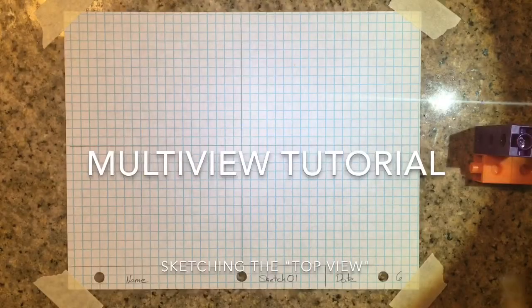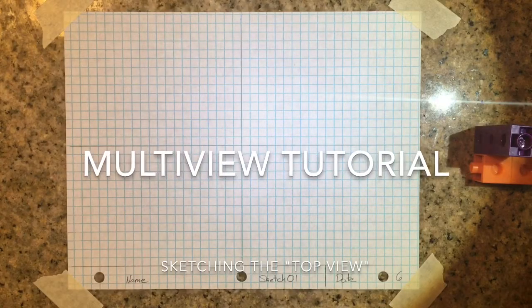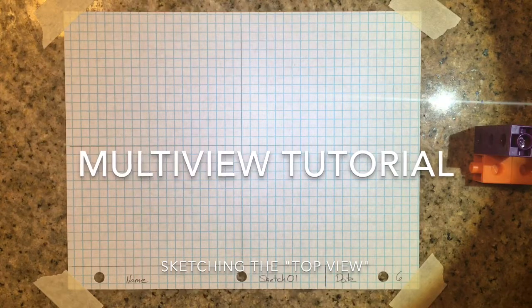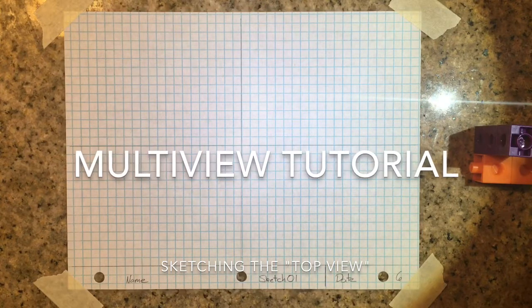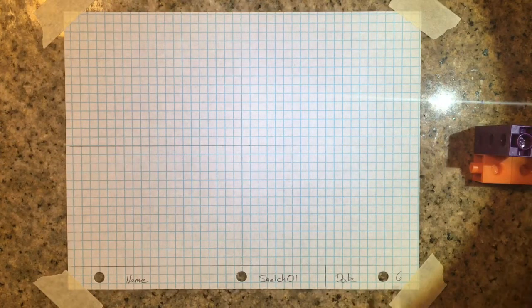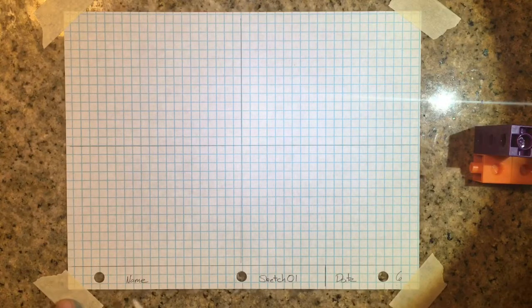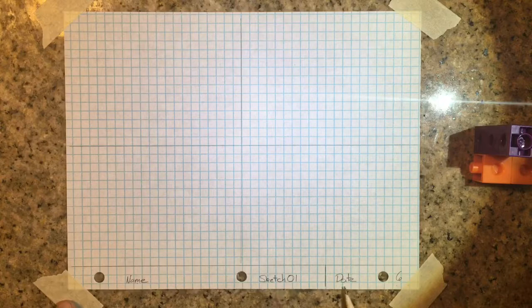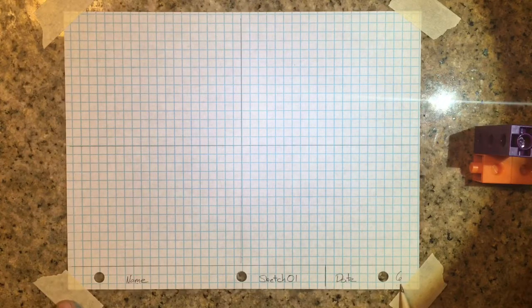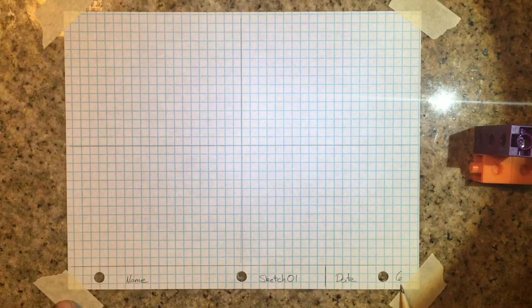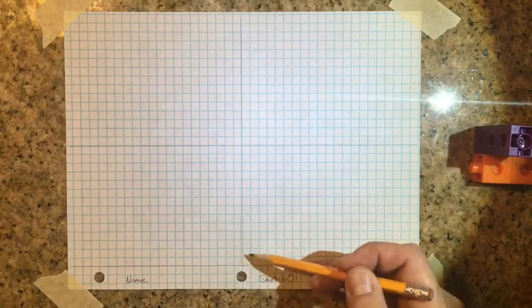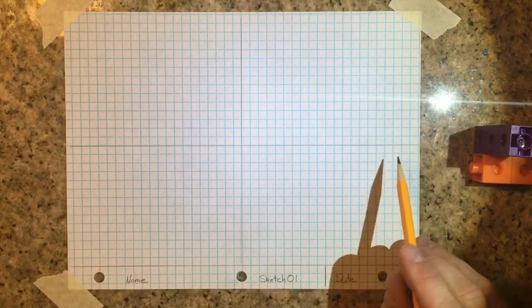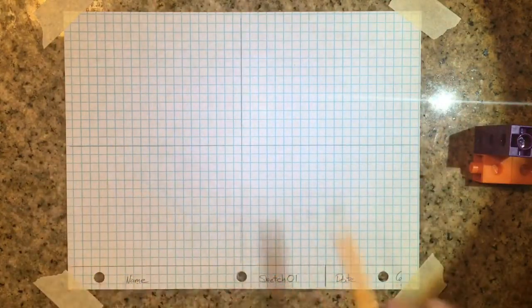Welcome to this tutorial where we're going to work on a multi-view drawing. This time we're just going to do the top view. You can see I have my paper set up with my name, title, date, and period listed at the bottom. I've also divided my paper in half both ways with a line so I have four quadrants and know where I'm going to put each of my pictures.